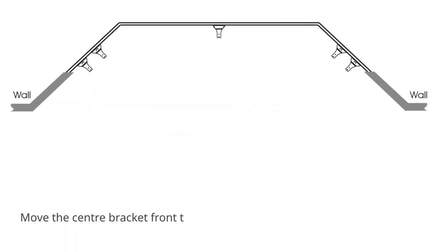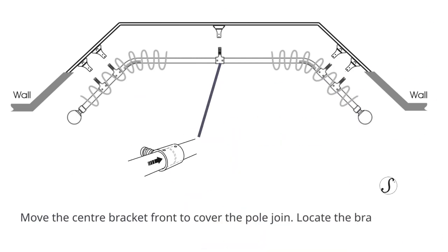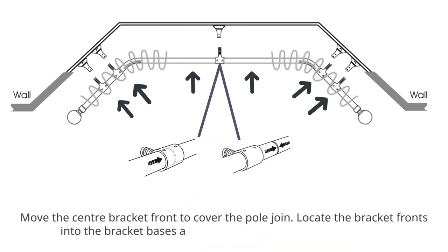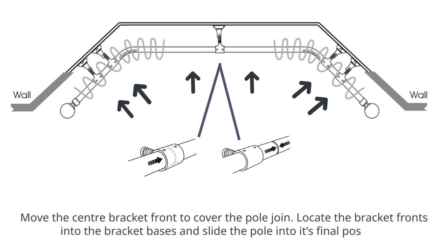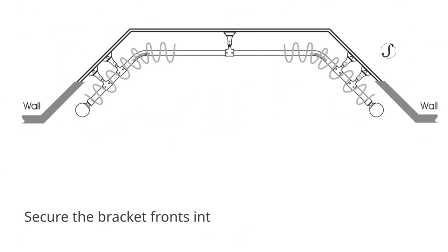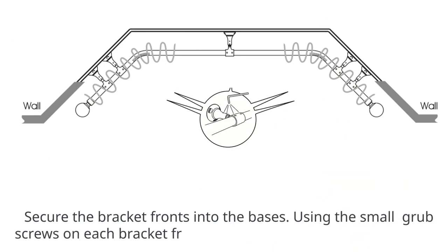Move the center bracket front to cover the pole join. Locate the bracket fronts into the bracket bases and slide the pole into its final position. Secure the bracket fronts into the bases. Using the grub screws on each bracket front underside, secure the poles in place.